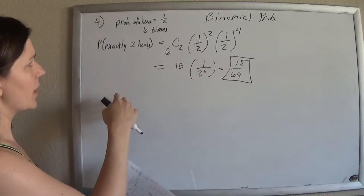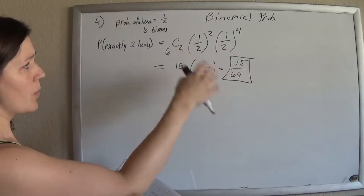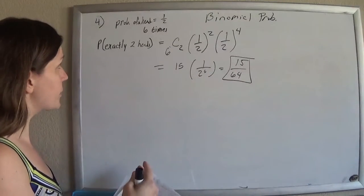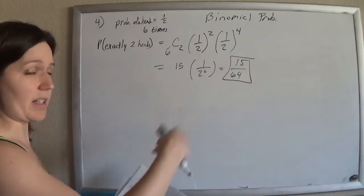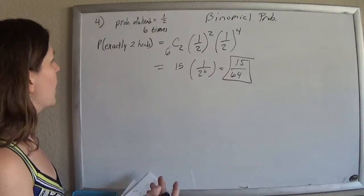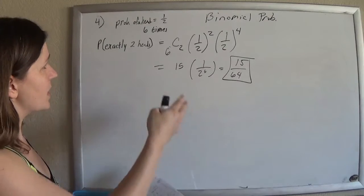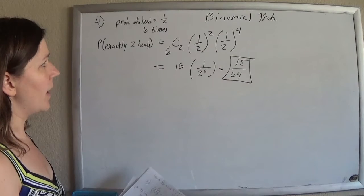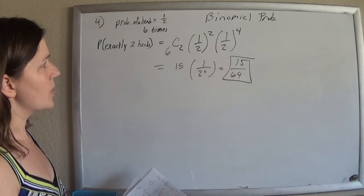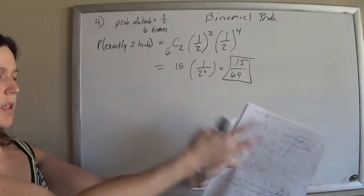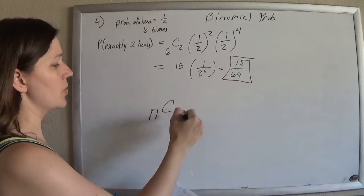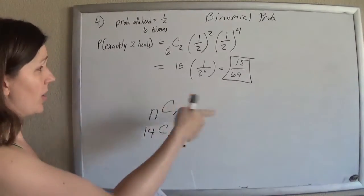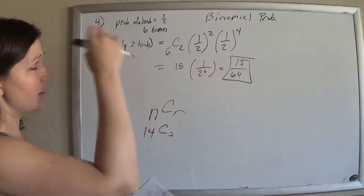So you can use binomial probability if you have independent trials — every time you flip the coin, it's independent of the next flip — and you have a fixed number of trials, like flipping it six times. It's a bit of a different feel here because they're all independent every time, not like the other ones where we had something and were choosing things, like having fourteen people and choosing three of them.